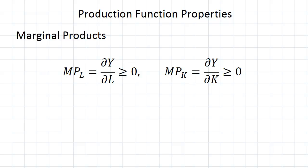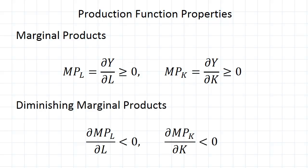We have an extra assumption about marginal products though, and that is that we have diminishing marginal products. The marginal products of these factors of production should be positive, but as the factors themselves grow we expect that the marginal product will decrease.